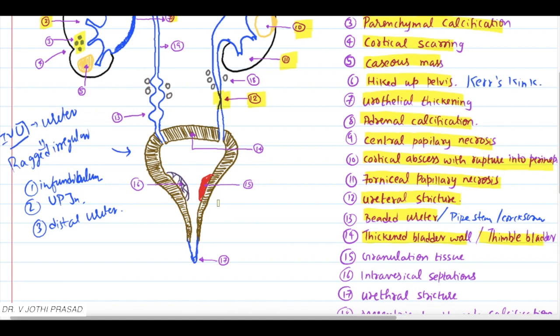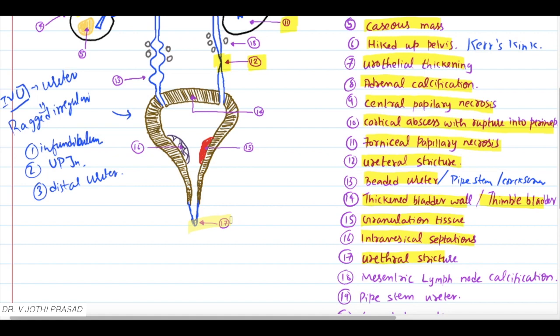Other minor conditions seen in contrast CT are granulation tissue and intravesical septations. The 17th finding is urethral stricture. This one is granulation tissue over here, and this one is an intravesical septation.